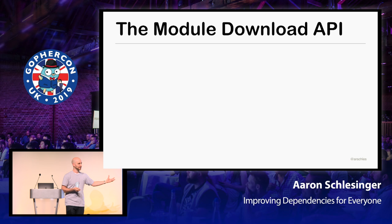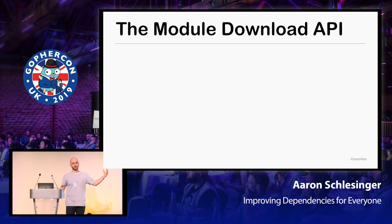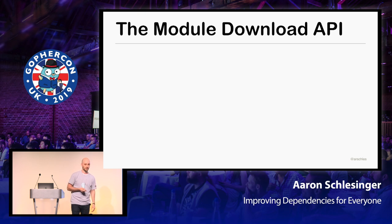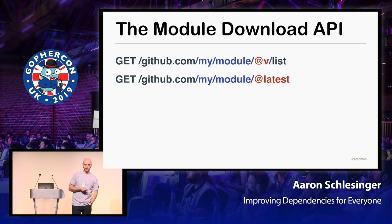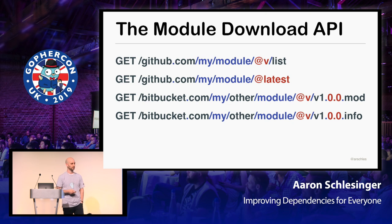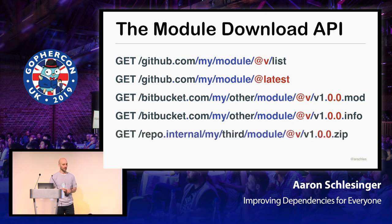The base tool we have to work with to solve this problem is called the module download API. If you look at the module spec, the module download API is a REST API that we can use to serve up modules. It's separate from the GitHub API, Git, Mercurial, or anything like that. We've got a couple of GET HTTP endpoints: you can list all the versions of a given module and get the latest version.